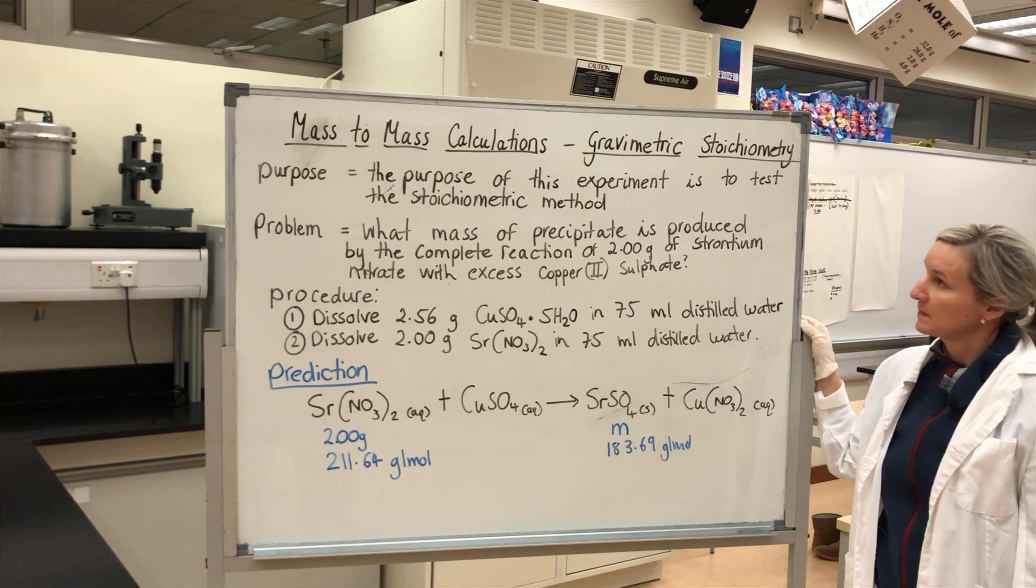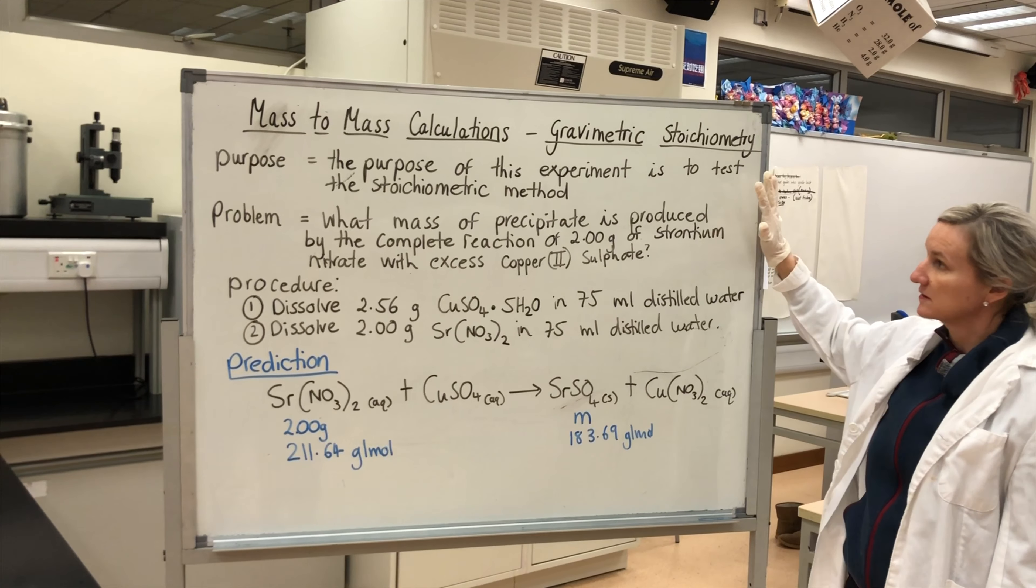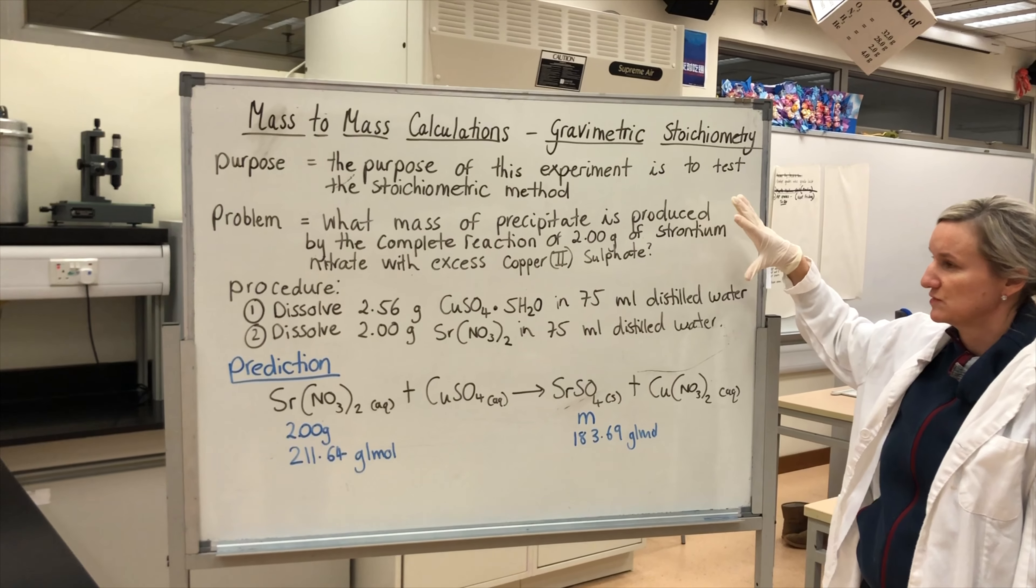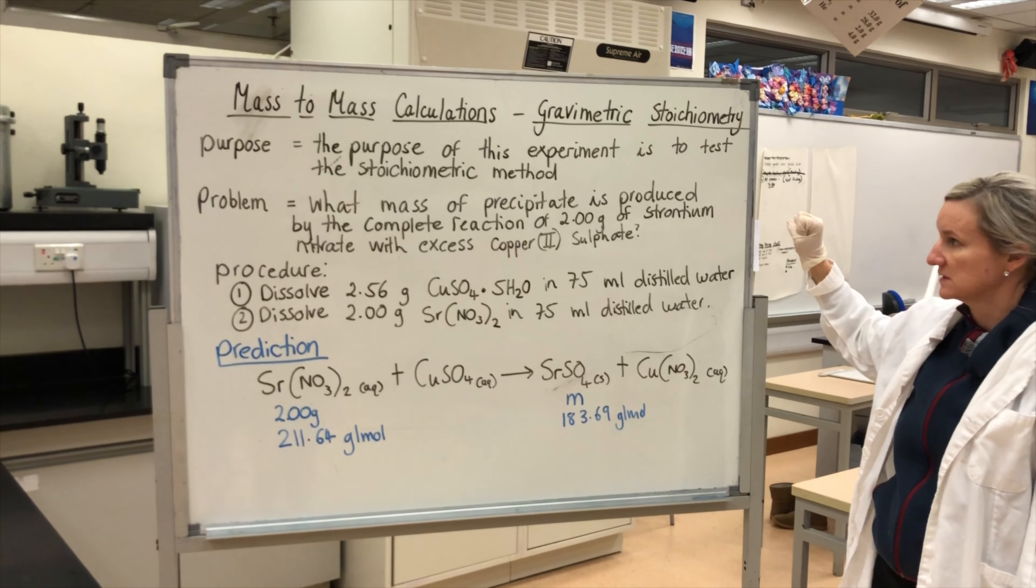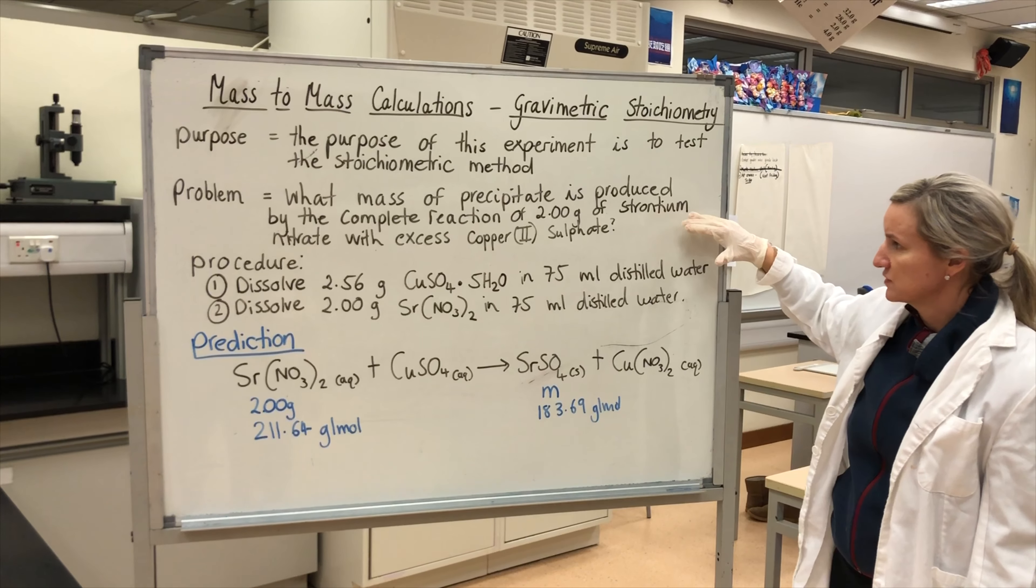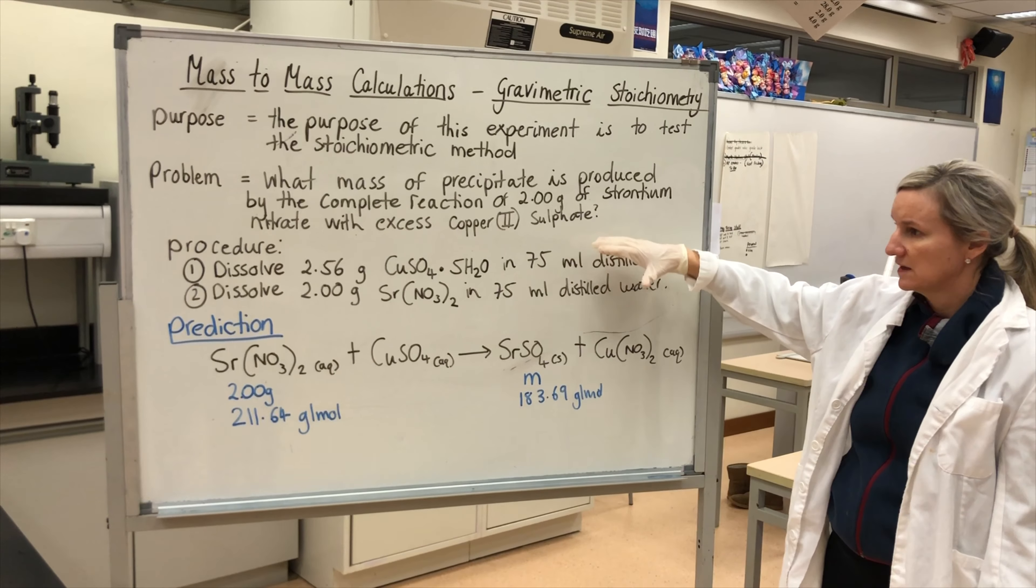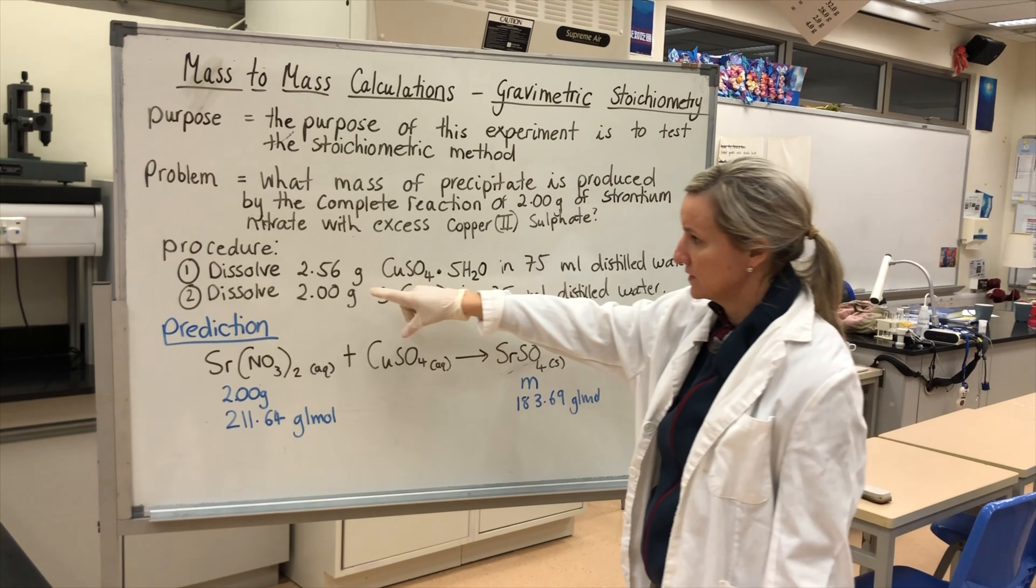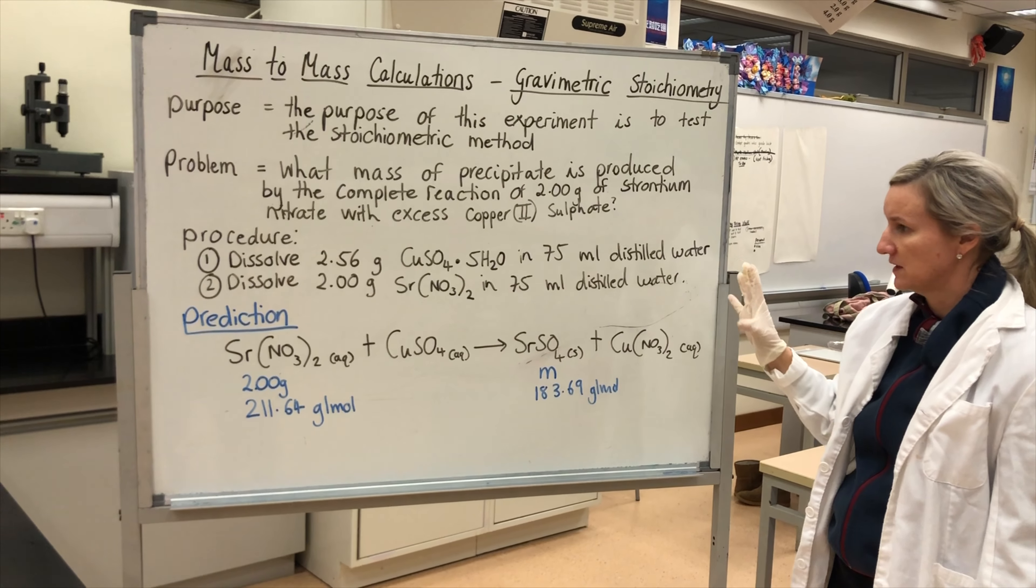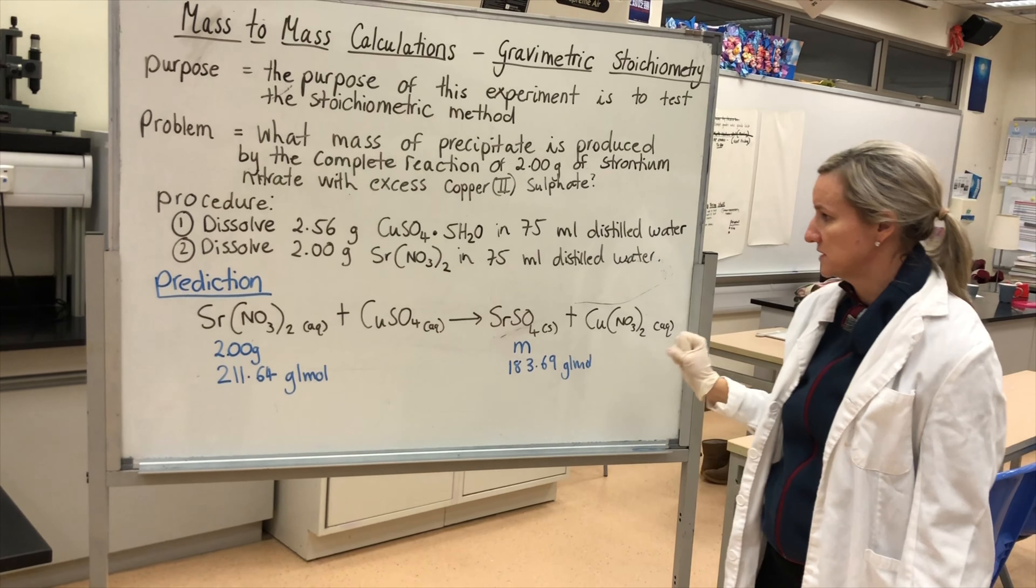So what I'm actually going to do is I'm going to mix some strontium nitrate, 2 grams of it, with some copper 2 sulfate. You can see down here that I'm going to weigh out 2.56 grams of copper sulfate pentahydrate and 2.00 grams of strontium nitrate.